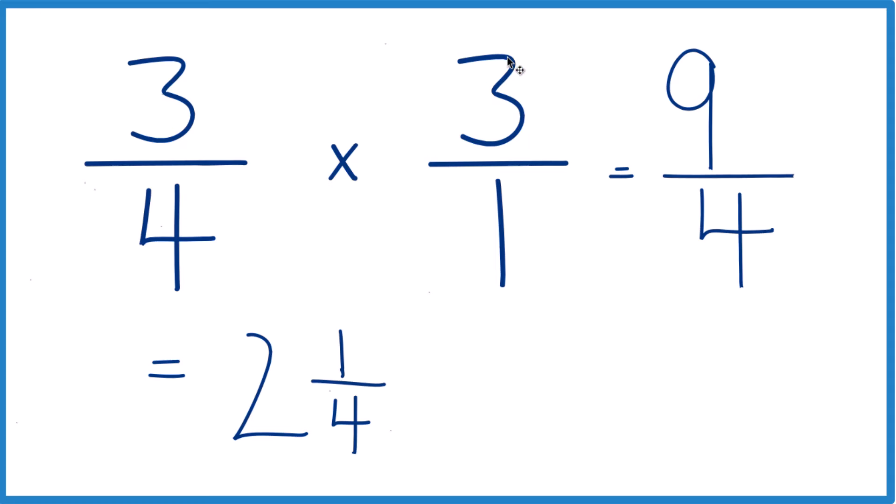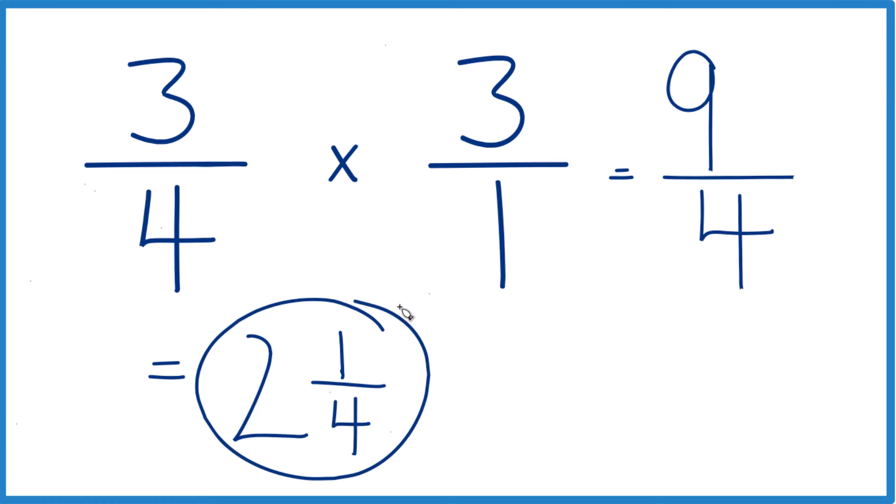three-fourths divided by one-third, or three-fourths times three, we end up with nine-fourths, or you could say, two and one-fourth. This is Dr. B. Thanks for watching.